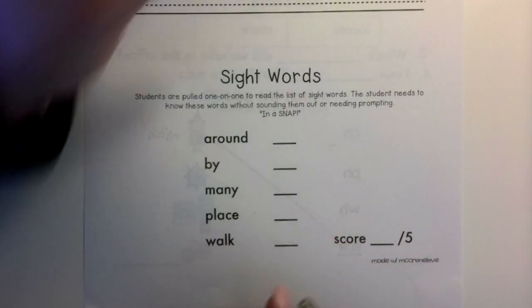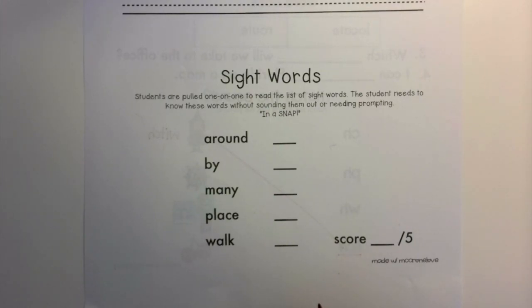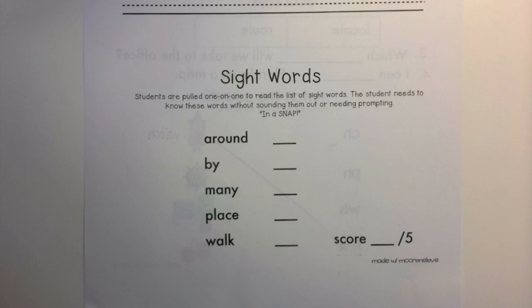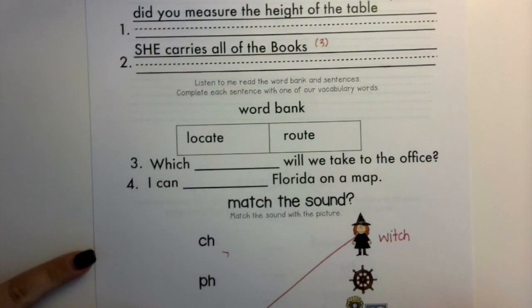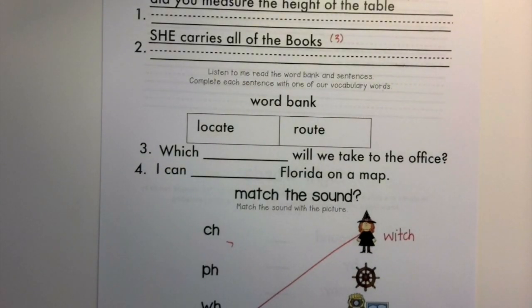Here are the sight words that you need to know. Go ahead and say those to an adult. Remember, these are words that you should be able to say in a snap — we are not sounding these words out. If you know them, you know them; if you don't, then those are words you'll need to practice more as we go into next week. When you are done with the back side — the sight words and reflecting — and you've made sure everything is correct on the front, this will go into your Friday folder and you will be done with reading for the week.